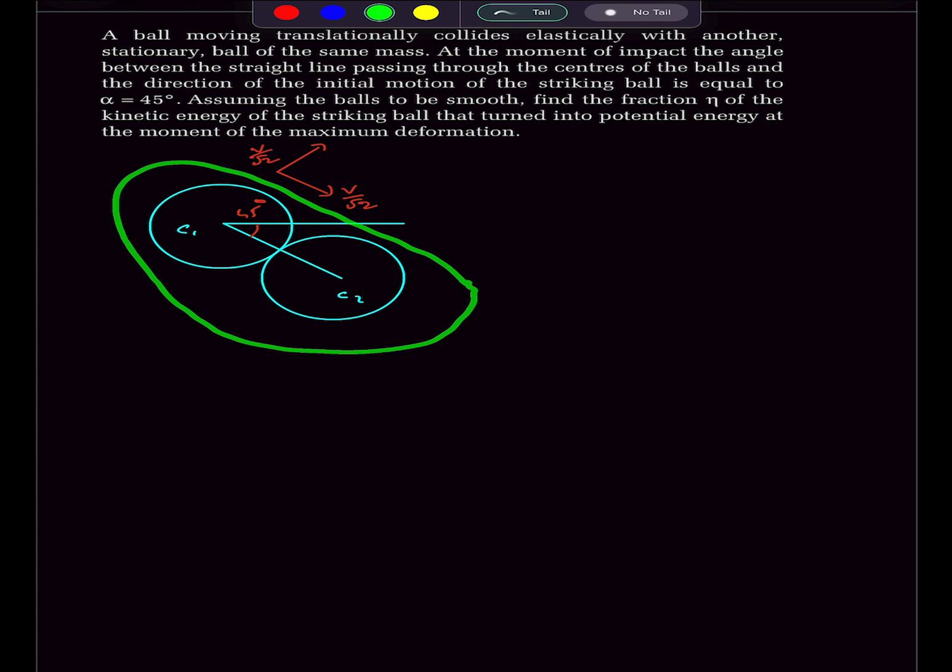Okay, now if we take these two balls as a system, there are no external forces acting on these balls. So we can say that the linear momentum of the system is conserved.